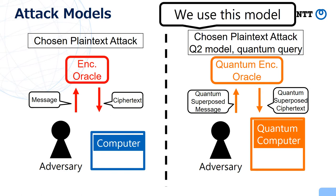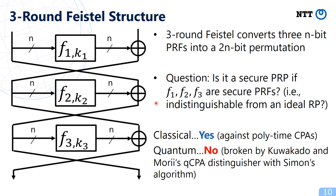All previous attacks that run in polynomial time are done in this Q2 model, and we also use this Q2 attack model. Next, I will explain about Feistel structures. This picture illustrates the three-round Feistel structure, which converts three N-bit PRFs into a 2N-bit permutation.